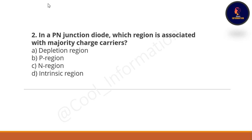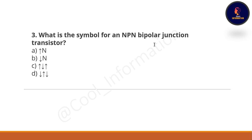Next question: In a PN junction diode, which region is associated with majority charge carriers? Option A: depletion region. Option B: P region. Option C: N region. Option D: intrinsic region. The correct option is P region.